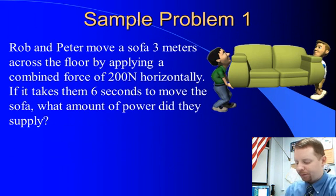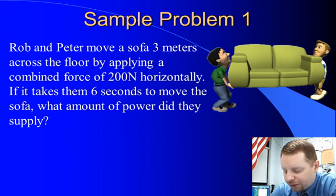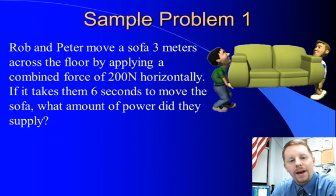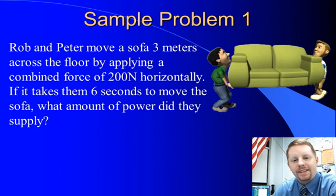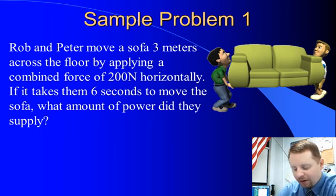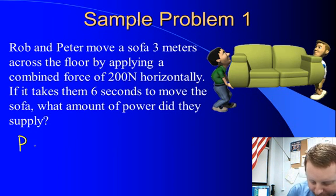Let's take a look at some examples. Rob and Peter move a sofa 3 meters across the floor by applying a combined force of 200 newtons horizontally. It takes them 6 seconds to move the sofa, so what amount of power did they supply? Well, to do this we recognize that power is work over time.